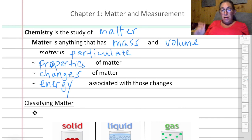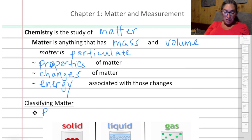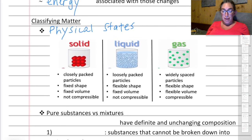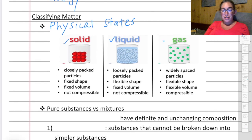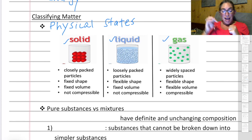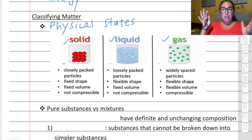We can classify matter by physical states, sometimes called the phases of matter. The three phases are solid, liquid, and gas — there's also plasma, but we won't get into that. Solids are made up of closely packed molecules or atoms that are very tightly packed together. Therefore, solids have a fixed shape and a fixed volume, and they're not compressible — you can't squish them.